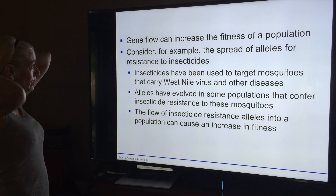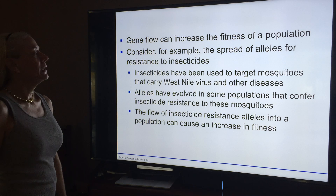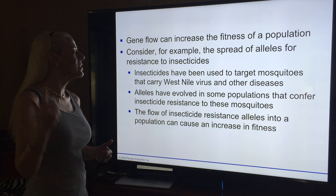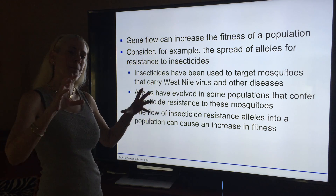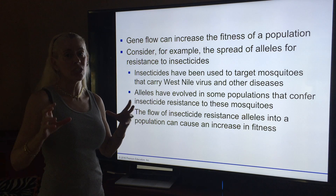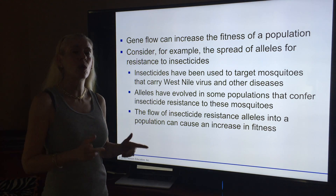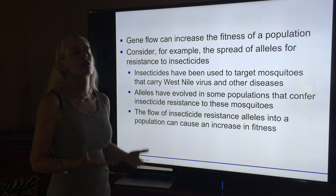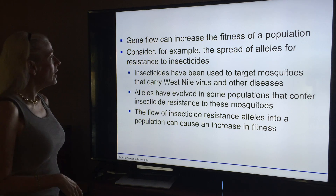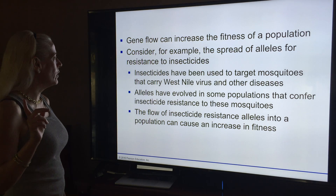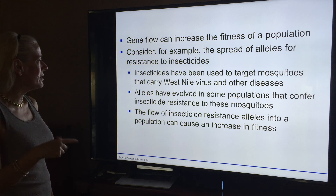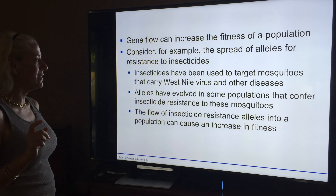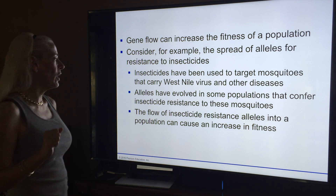With insecticides, bacteria, pests — it works the same over and over again. There are a couple of them that make it through because they had a little genetic variation, and they are the only ones that reproduce. Then the next generation has that gene to be resistant to whatever that insecticide is. Insecticides have been used to target mosquitoes that carry West Nile and other diseases. They have evolved in some populations that confer insecticide resistance, and the flow of insecticide-resistant alleles into a population can cause an increase in fitness.